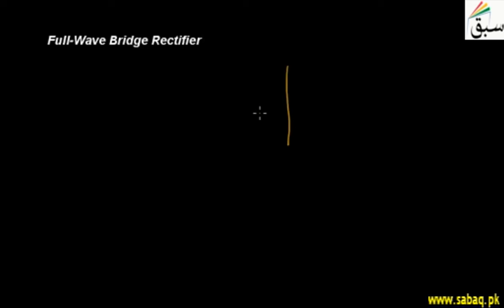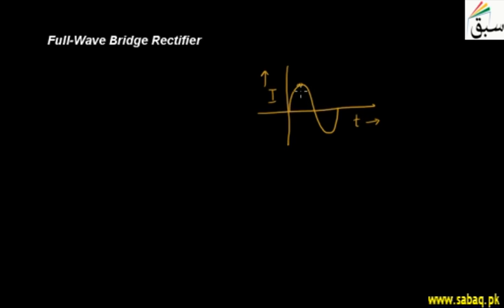A rectifier is a setup where we join components which, through alternating current, allow flow only in one direction. We know that alternating current is a current which changes its direction. You can see that I'm drawing a graph with an alternating current, and the current is changing its direction. The current goes to a maximum value in one direction and then goes to maximum value in the other direction — it changes its direction.